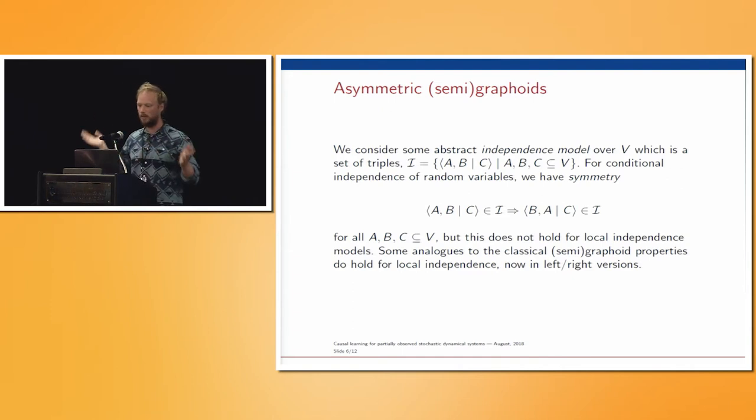To make totally clear what I mean by that, we're considering some abstract independence model. What I mean by symmetry is that whenever I have that B is independent of A given C, then that implies that A is also independent of B given C. This is what I don't have. Of course, this is something we have for conditional independence, but in this case this does not hold true. It just changes all of the theory and also the graphs and separation criterion that I need to use. Symmetry is one of these classical semi-graphoid properties that does not hold, but some of the others do hold. Now they just have left and right versions, because in the classical setup you don't need to distinguish between left and right versions. You have symmetry, so one follows from the other, but now you do need to distinguish that.